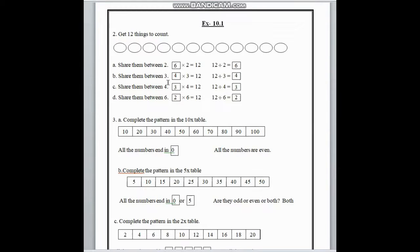Share them between 3 — we have to share this 12 by 3. To find out this answer, we divide 12 by 3, and here we get 3 fours are 12. So in this blank box, we have to write 4. In number C, share them between 4. We divide 12 by 4 and we get 3. So in this blank box, we have to write 3.